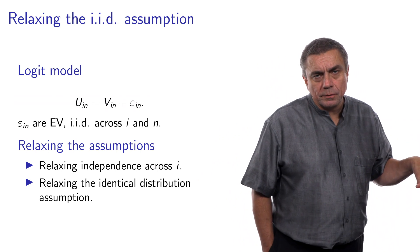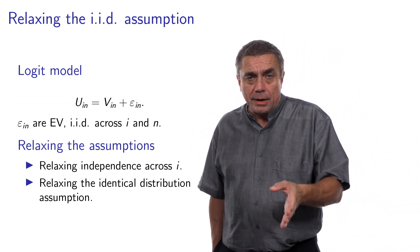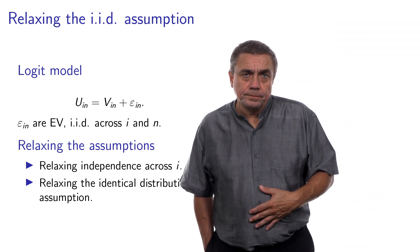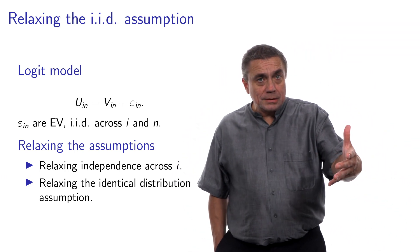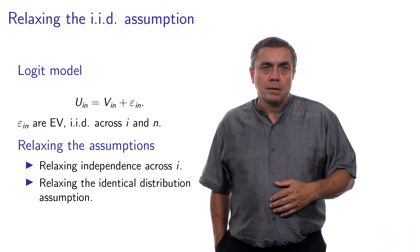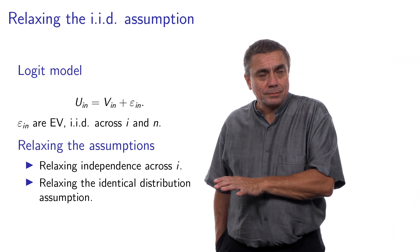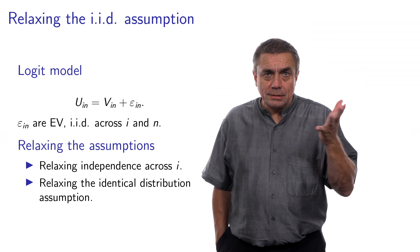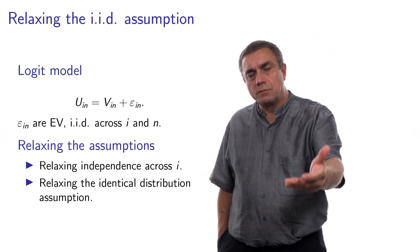We have seen in the context of nested logit model that the independence assumption across alternatives may lead to counterintuitive results. Two things we can do with mixtures is to relax the independence across alternatives, exactly as we did with the logit model, but also relaxing the identical distribution assumption. In this video, I would like first to look at relaxing the independence across alternatives, and we will cover the second one in the next video.